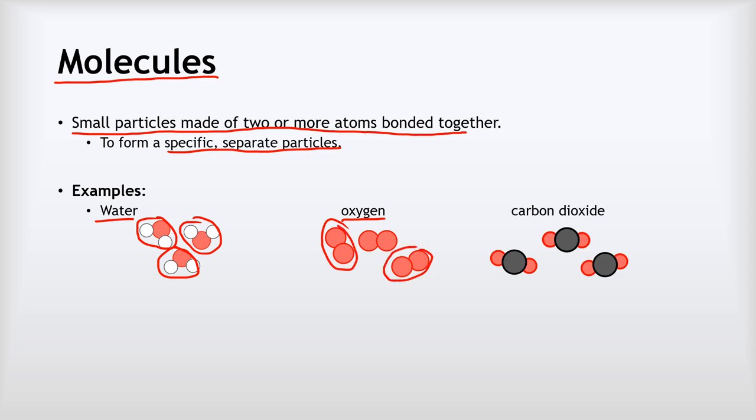Oxygen gas is also made of molecules. And this time it's made of molecules out of two atoms joined together. And again, we've got three separate molecules here. And finally, carbon dioxide. Carbon dioxide gas is also an example of something made of molecules. Each of those is made from three atoms, one carbon and two oxygens in each case.